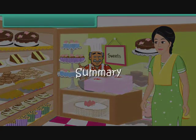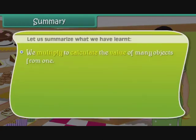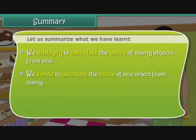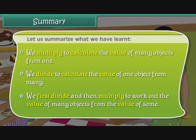Summary. Let us summarize what we have learnt. We multiply to calculate the value of many objects from 1. We first divide and then multiply to work out the value of many objects from the value of some.